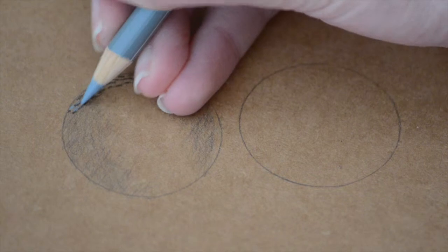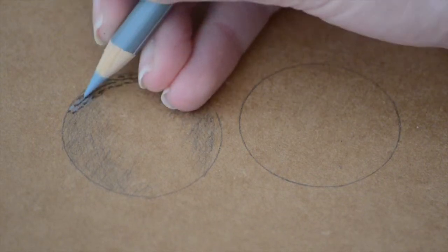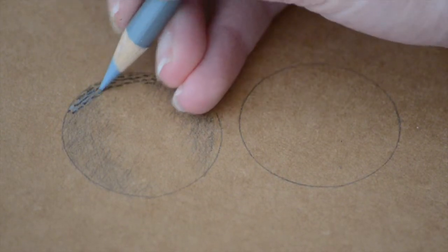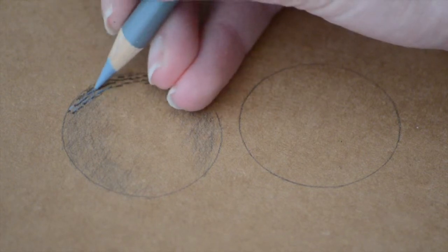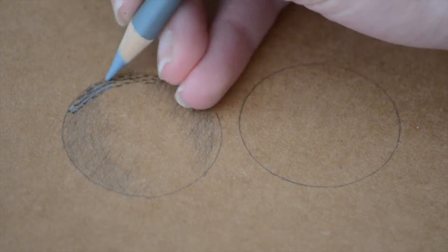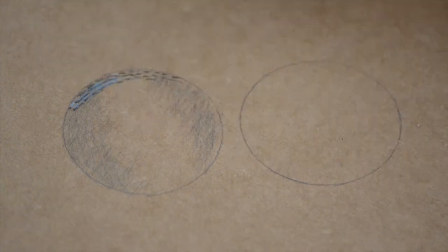Then blend in another shade relevant to the fur so I'm using grey here and it's following exactly the same process of just putting these small little dashes in slightly randomized but obviously in line with each other.